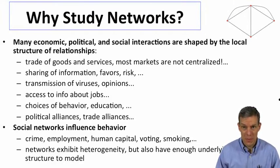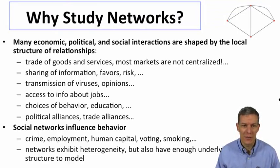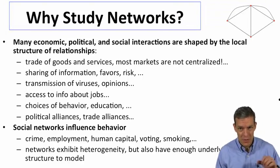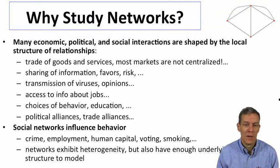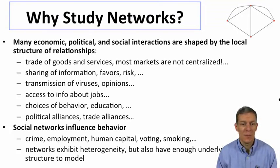From a social scientist's perspective, many economic, political, and social interactions are embedded in social settings, and the structure of those relationships is very important in both determining how people behave and determining what outcomes are. Things like trades of goods and services—most markets are actually not centralized but occur between different parties in bilateral relationships—sharing of information, sharing of favors, risks, transmission of viruses, opinions, how you find out about a job, often through somebody you knew.